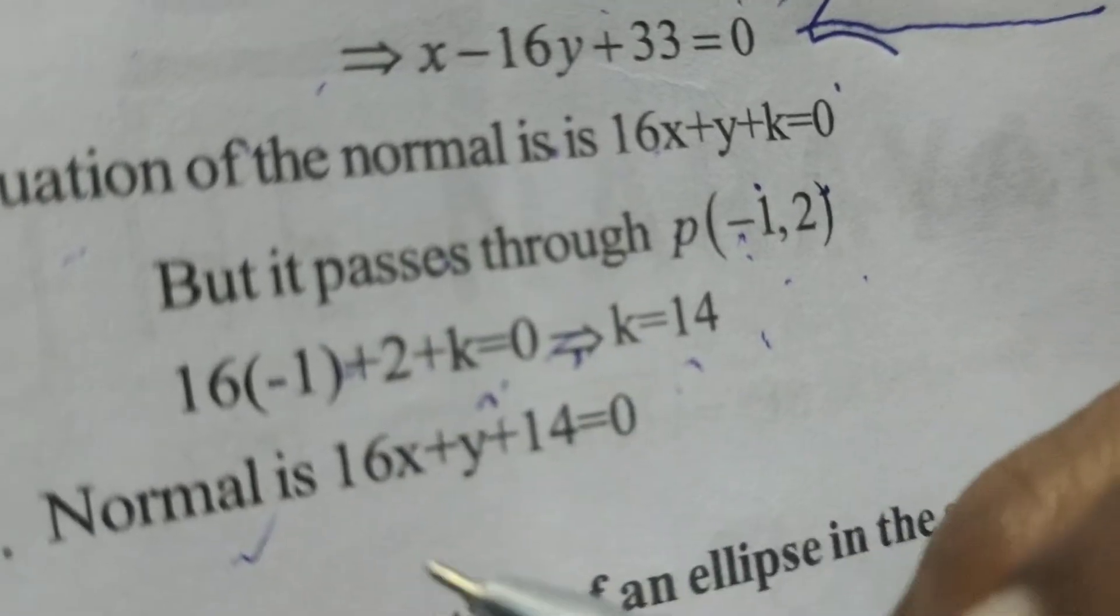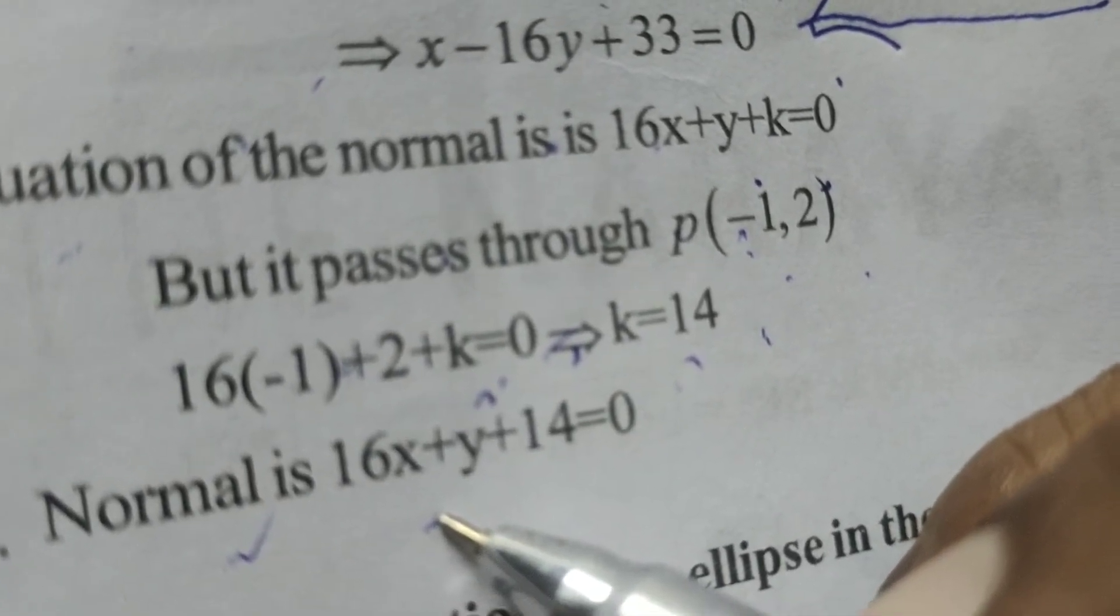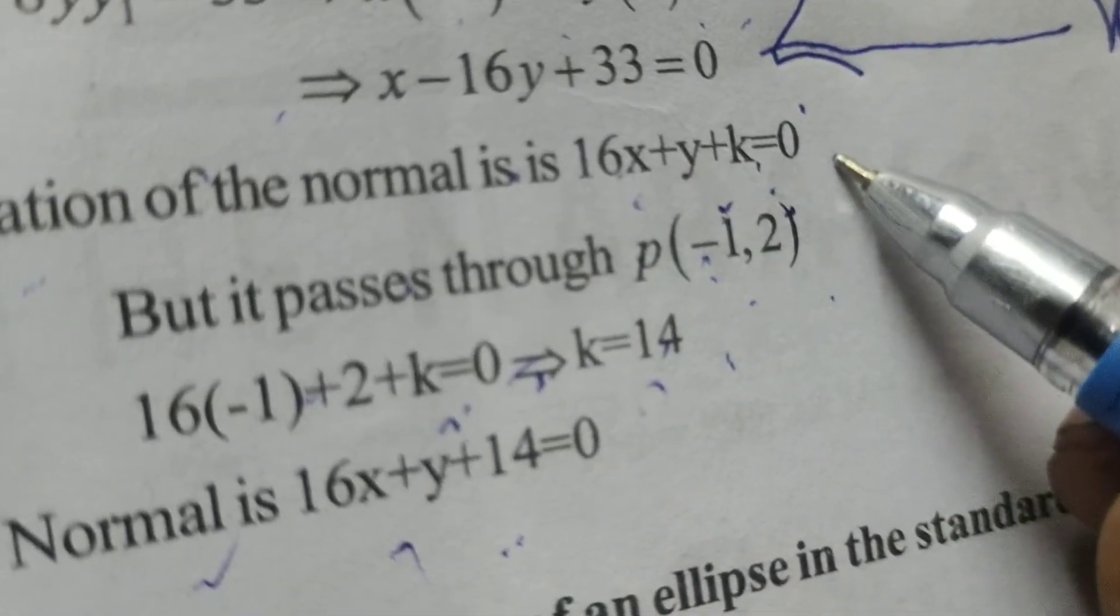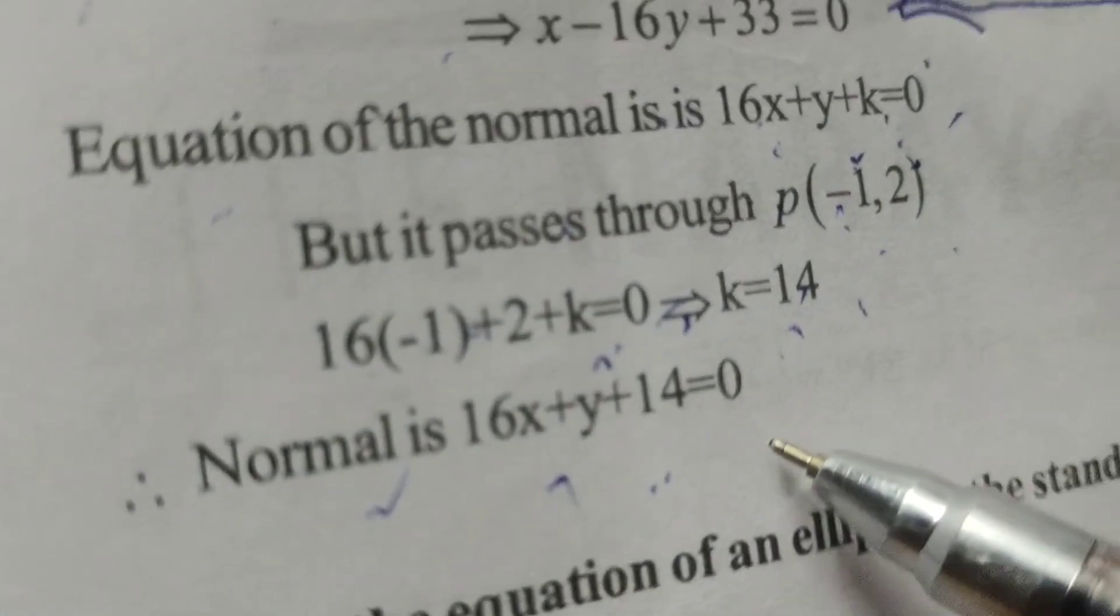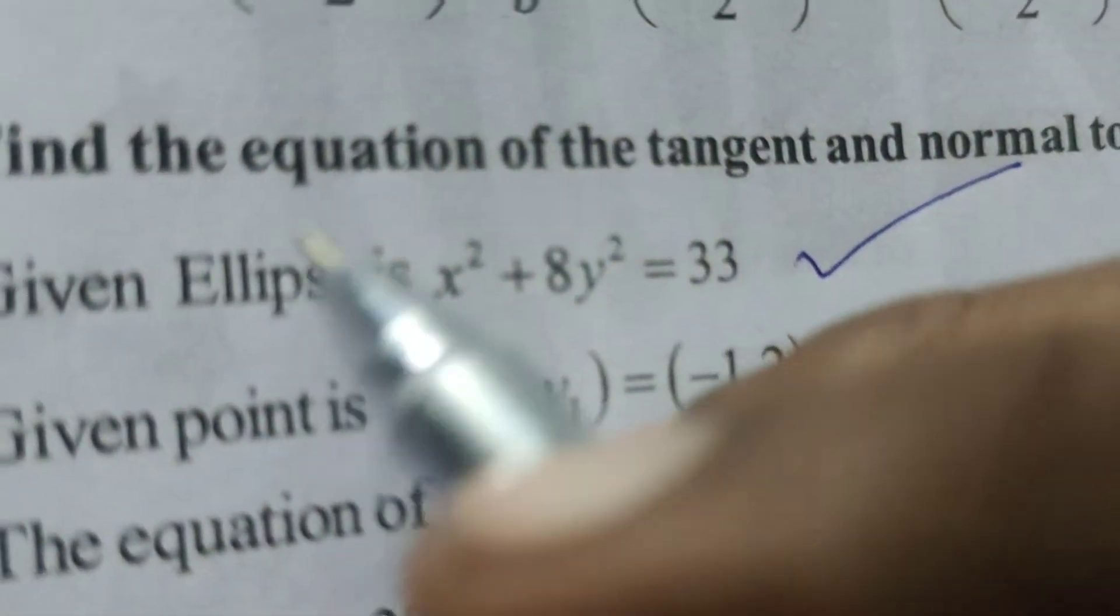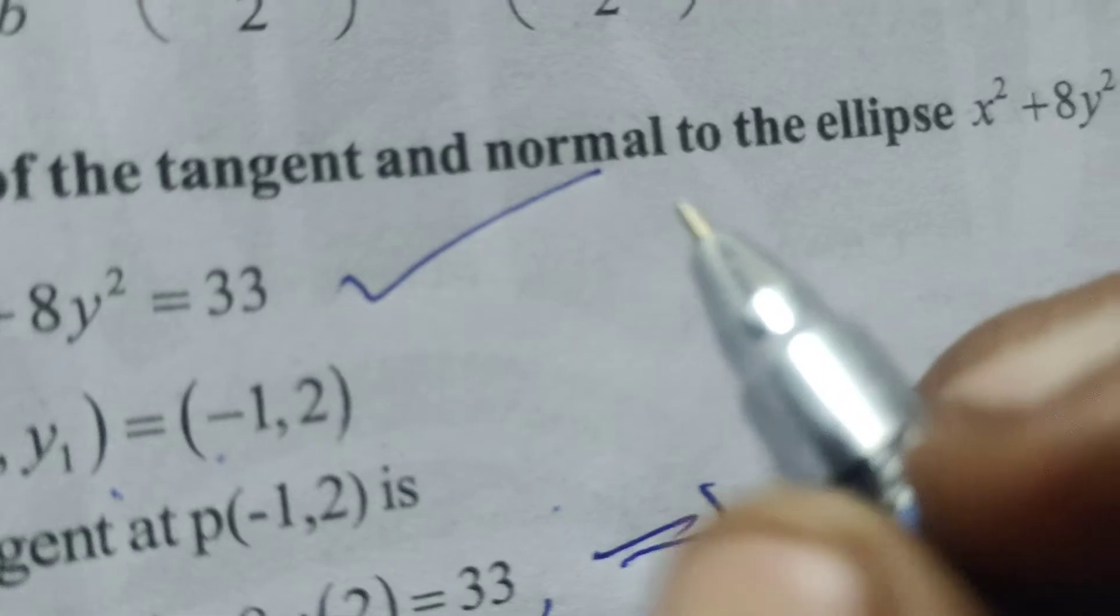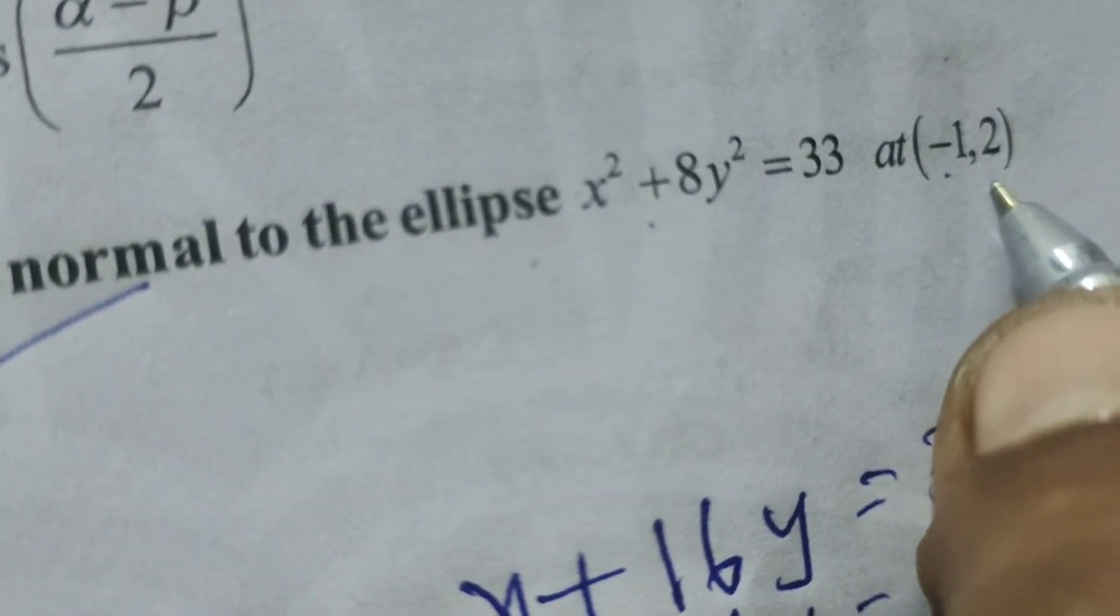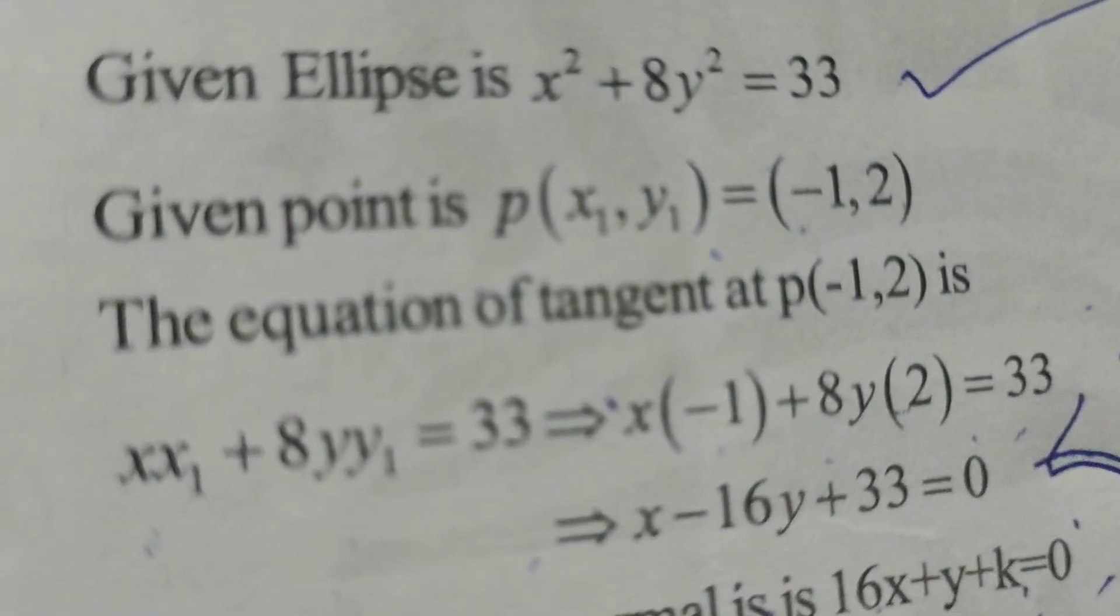Therefore, the normal is 16x + y + 14 = 0. This is the required equation. We found the equation of the tangent and normal to the given ellipse at the point (-1, 2). Thank you.